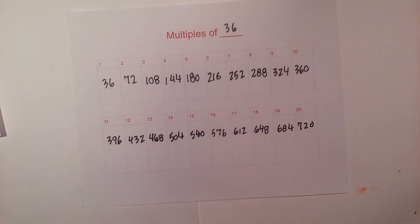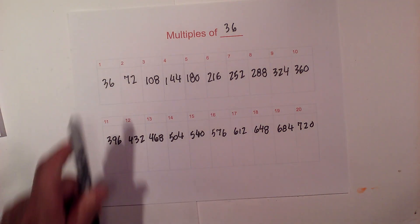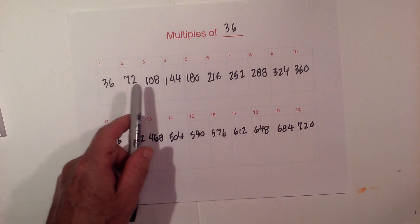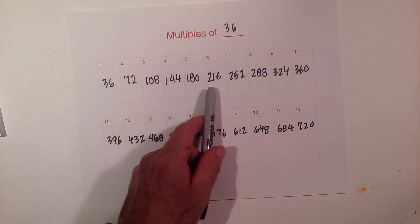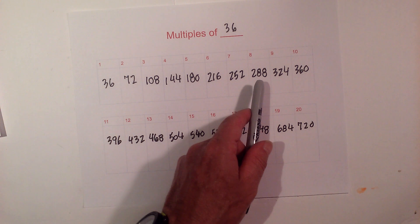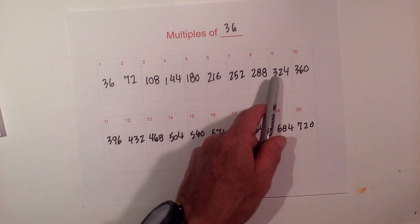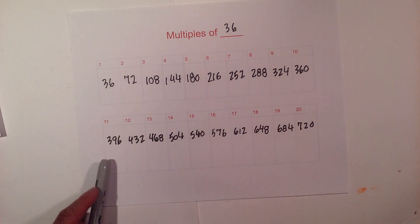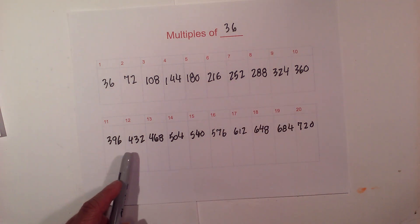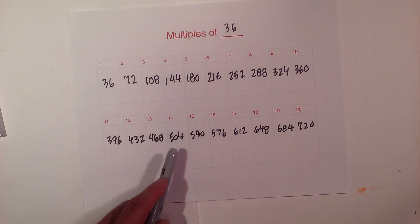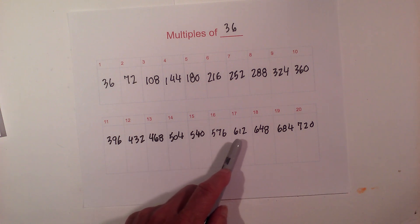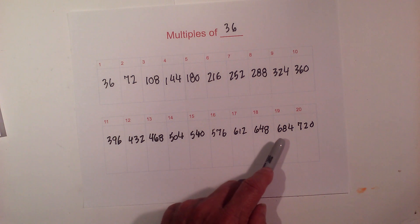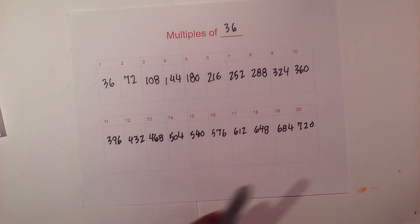So there are the multiples of 36: 36, 72, 108, 144, 180, 216, 256, 288, 324, 360, 396, 432, 468, 504, 540, 576, 612, 648, 684, and 720.